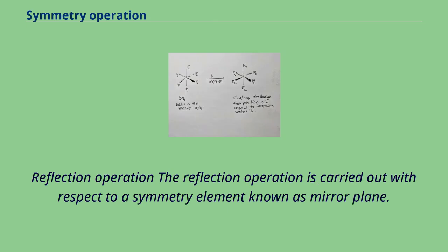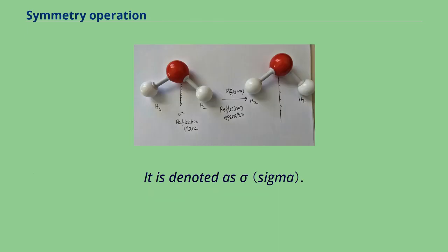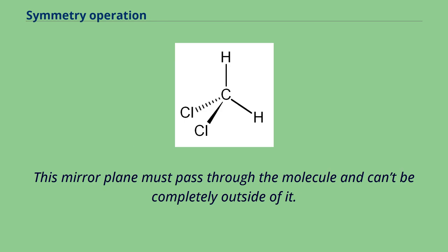Reflection operation. The reflection operation is carried out with respect to a symmetry element known as mirror plane. It is denoted as sigma. This mirror plane must pass through the molecule and can't be completely outside of it.